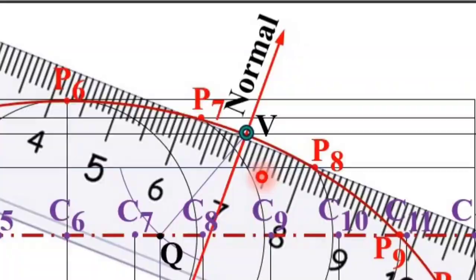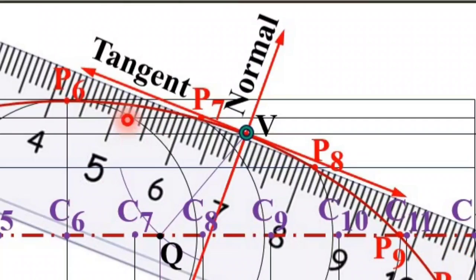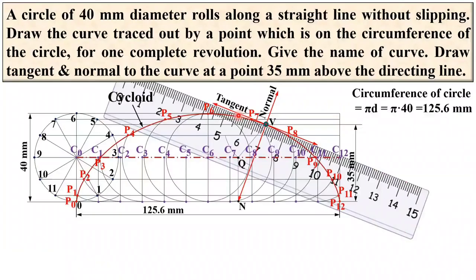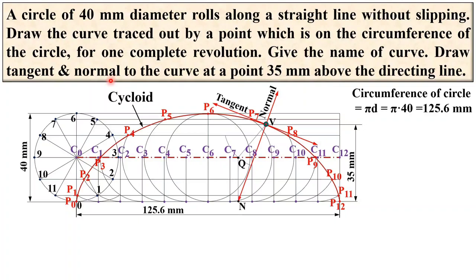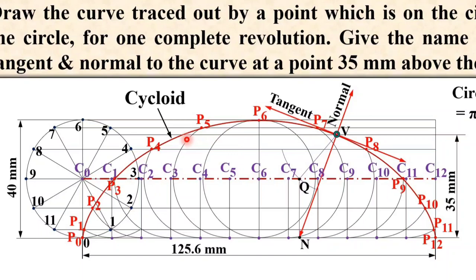The perpendicular to the normal passing through point V gives you the tangent, which you can draw with the help of a scale. Match the long line on the scale to the normal and automatically it will give you the perpendicular line — that is the tangent. So this is your third answer: draw normal and tangent to the curve at a point 35 mm above the directing line.